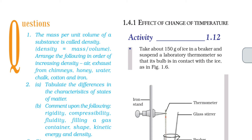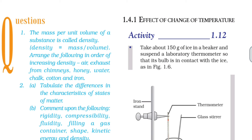Arrange the following in order of increasing density: air exhausted from chimneys, honey, water, chalk, cotton, and iron. That is the increasing order of density.